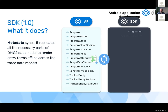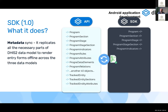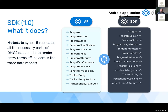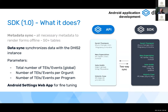Starting from 1.0, the SDK does many things. For metadata, it downloads all the necessary parts of the DHIS2 data model — programs, org units — in order to render data entry forms and let the app work in offline mode.